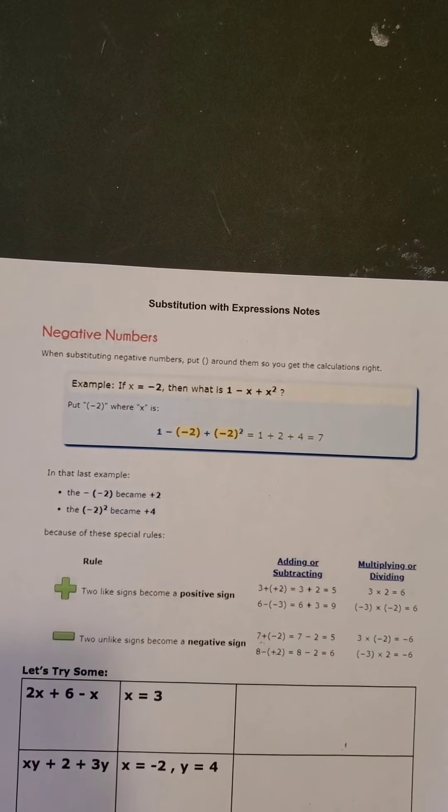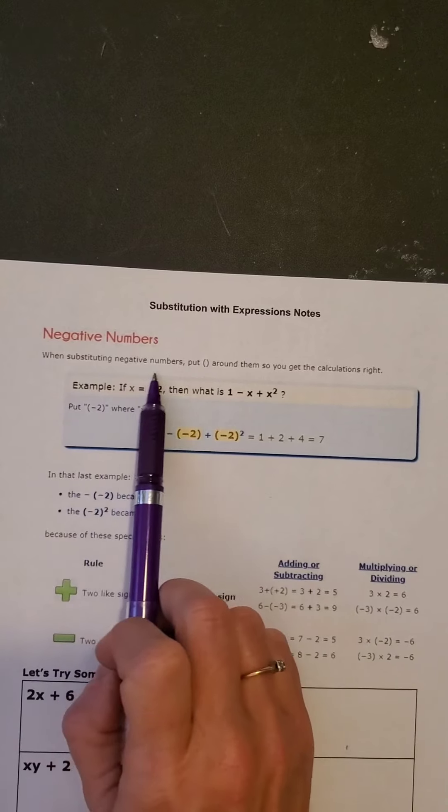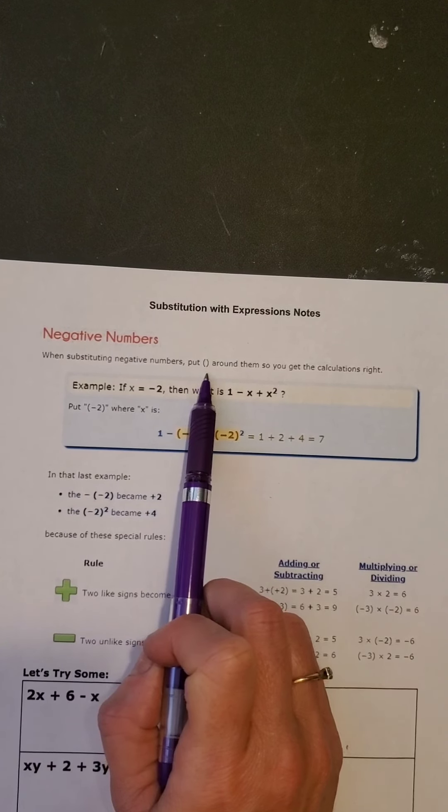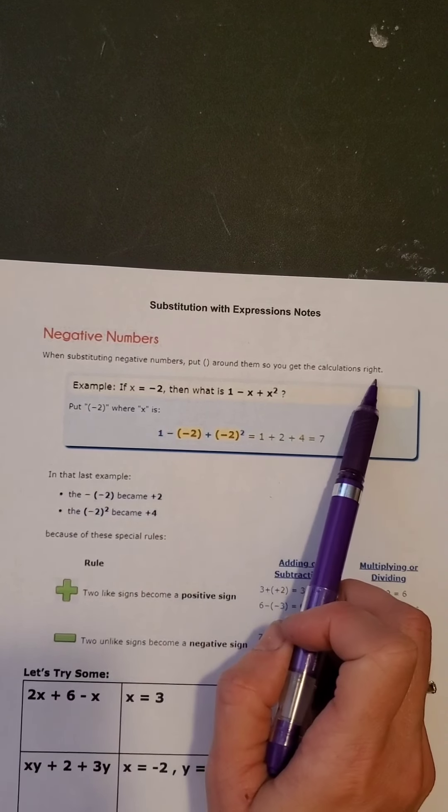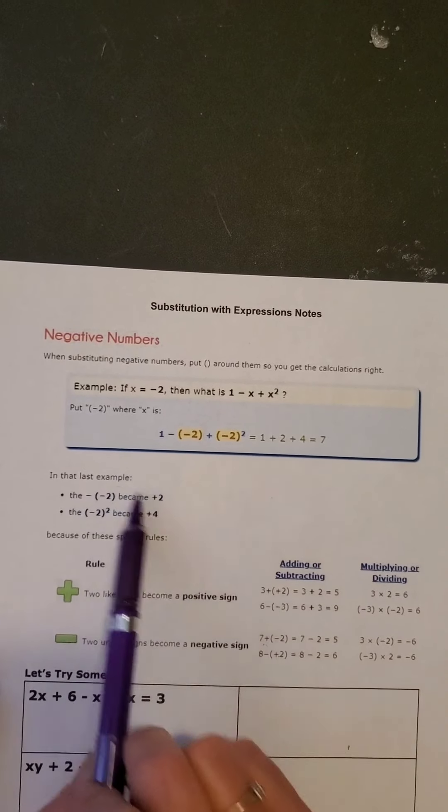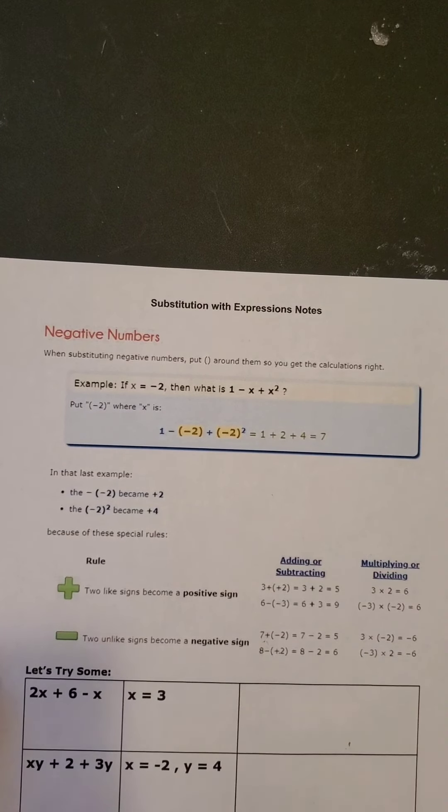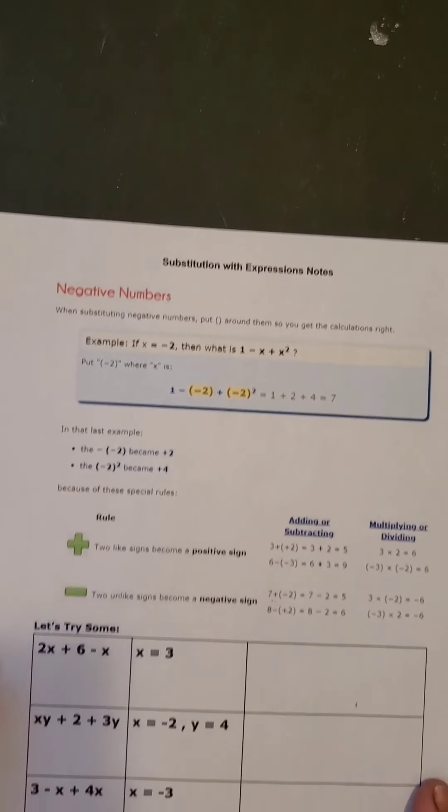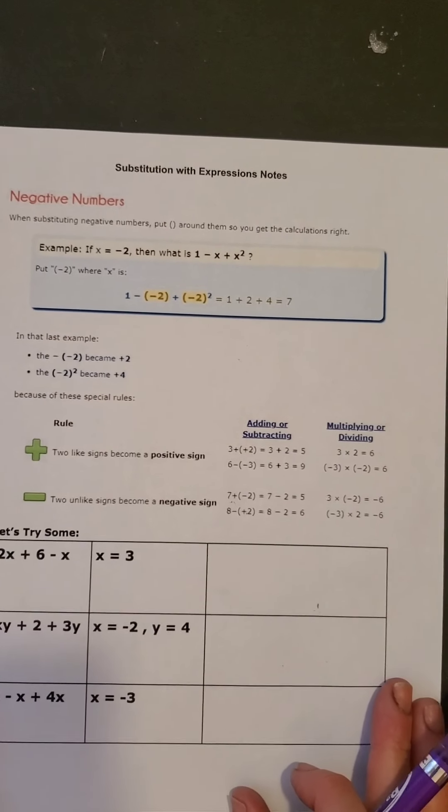So when substituting negative numbers, put a parenthesis around them so you can get the calculations right. So just notice how they put the parenthesis there. We are going to come down here and just work these examples real quick.